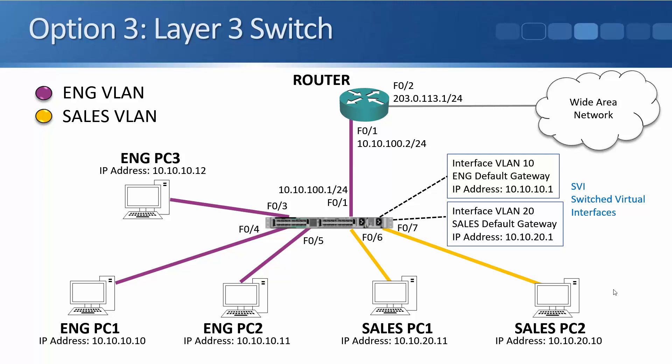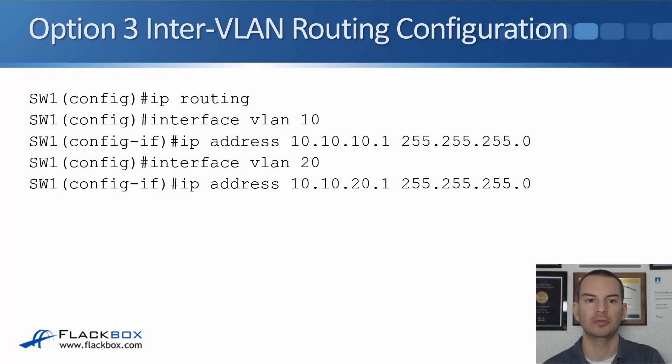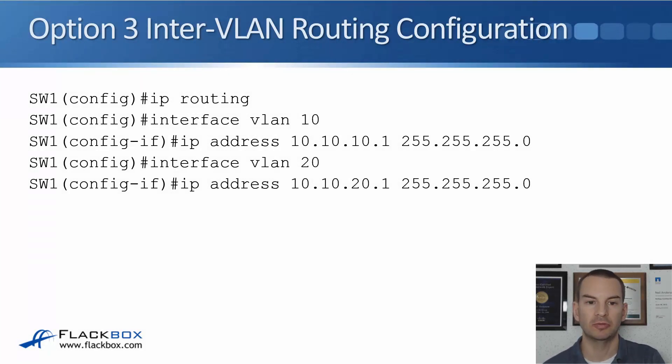Whenever there's traffic between our internal VLANs, that gets routed on the switch and never goes up to the router. But whenever traffic needs to go outside the local area network out to the WAN, that gets sent up to the router. Let's check the configuration for this — starting with just the inter-VLAN routing before we look at the WAN connectivity configuration.